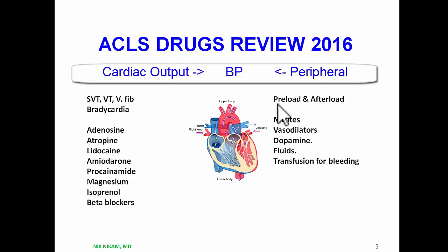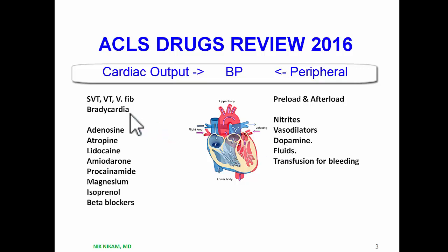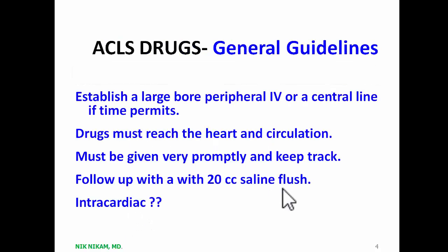One more aspect we need to consider is blood pressure. We could improve contractility, but unless we have adequate perfusion pressure, the purpose of ACLS may be less efficient. It is very important to establish adequate blood pressure that will enable us to perfuse the vital organs during cardiopulmonary resuscitation. We have drugs that improve resistance by causing vasoconstriction and, at times, improving vasodilatation in certain organs.